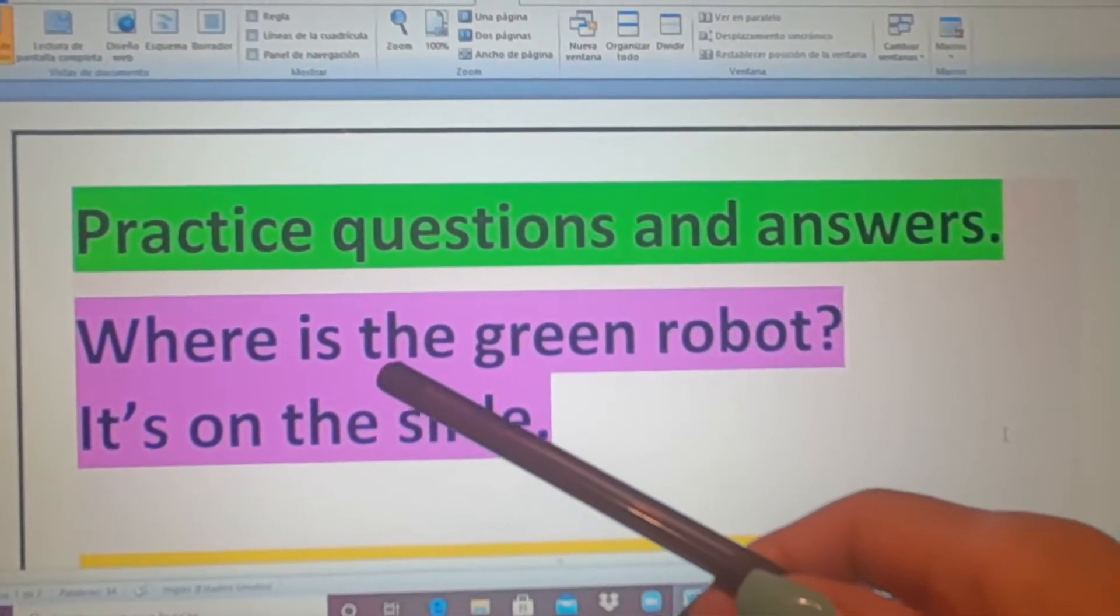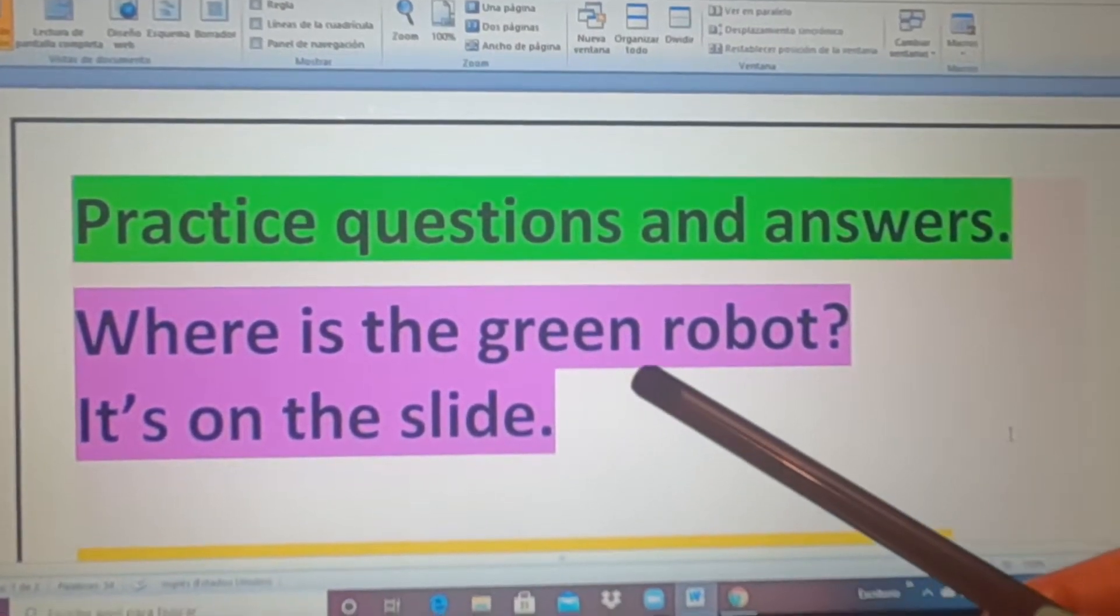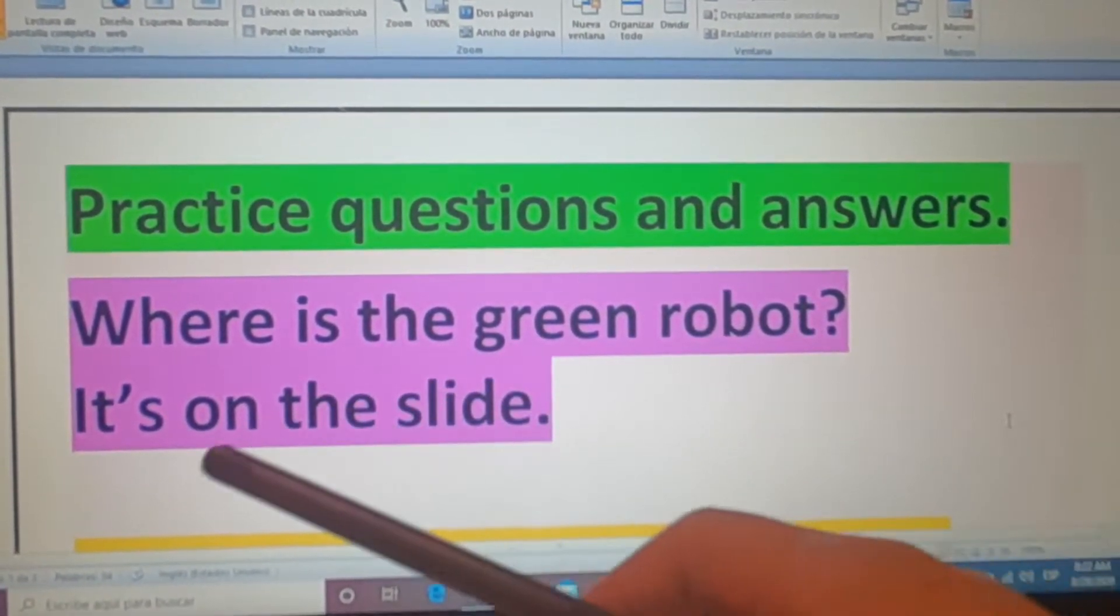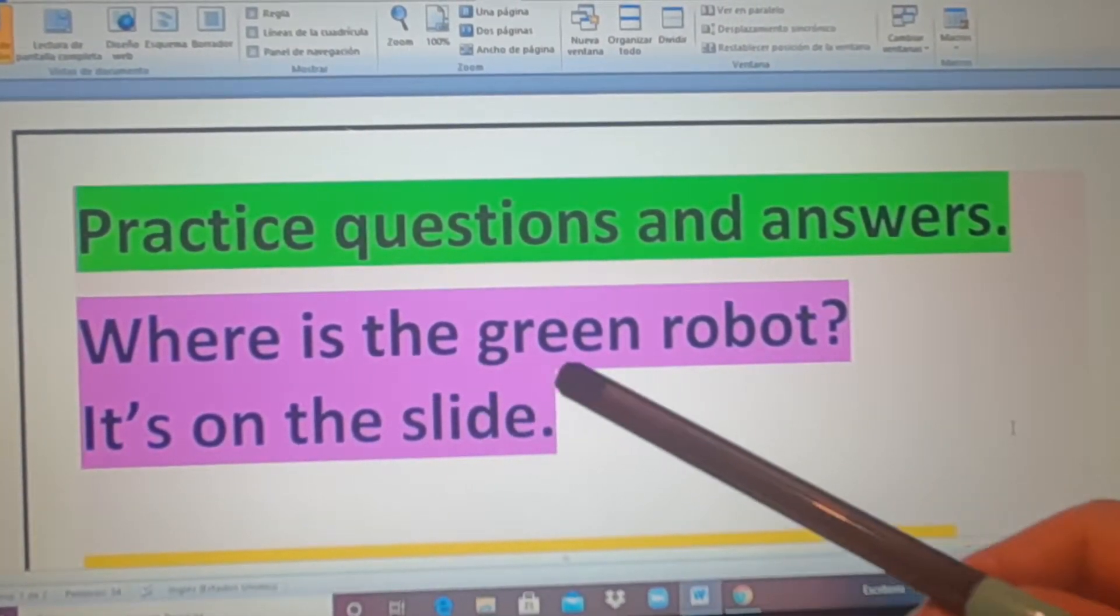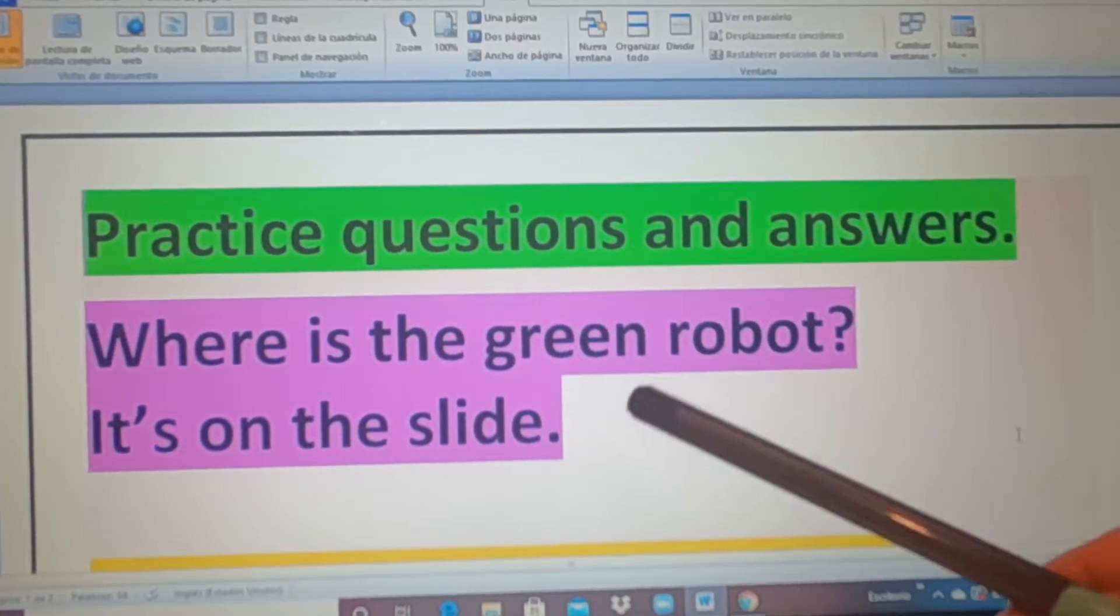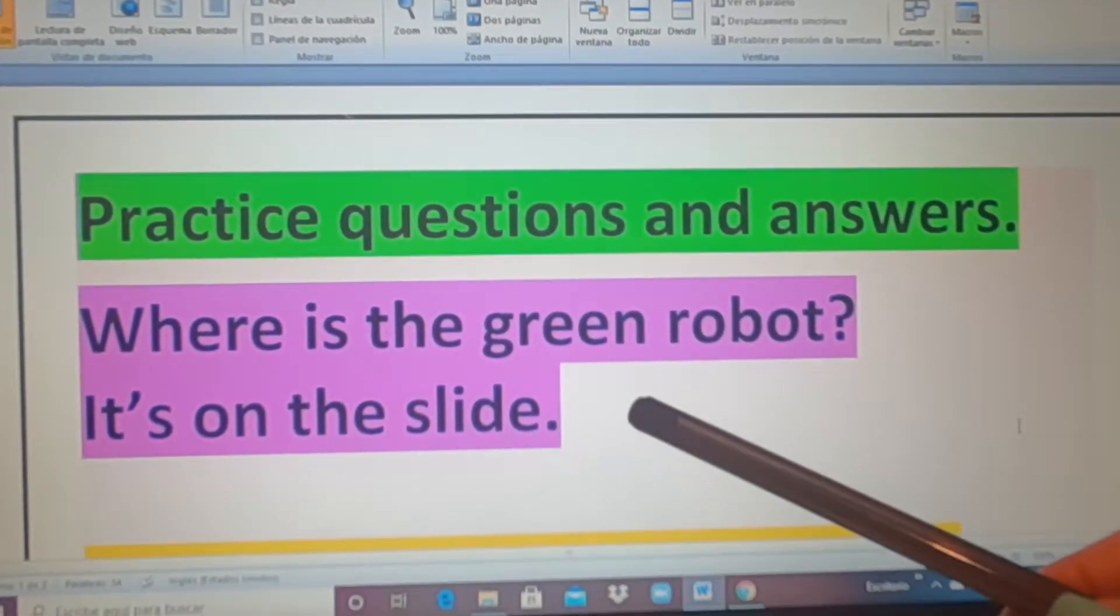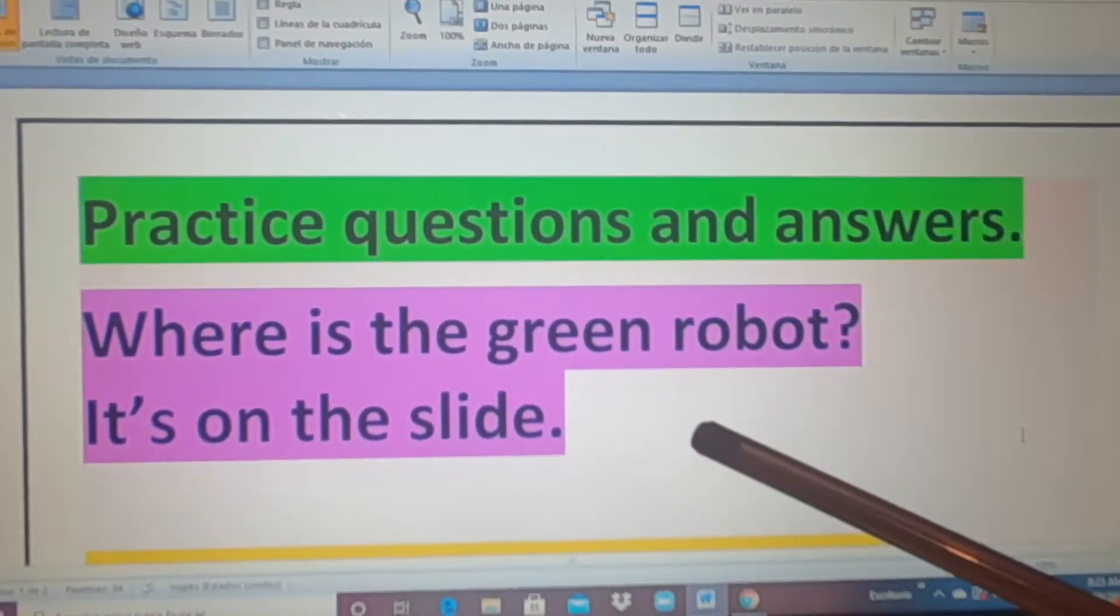Where is the green robot? It's on the slide. ¿Dónde está el robot verde? Está sobre la resbaladilla.